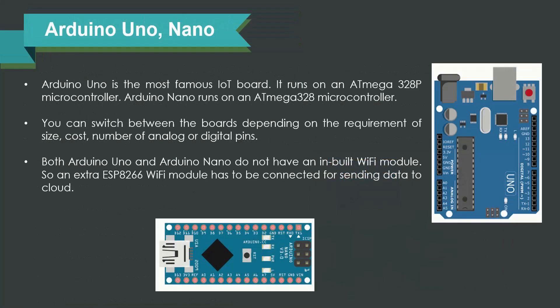Let us start with Arduino Uno and Nano. Arduino Uno is the most powerful as well as famous IoT board in the market. It runs on an ATmega328p microcontroller. Arduino Nano runs on an ATmega328 microcontroller. You can switch between the boards depending on the requirement based on size, cost, and analog and digital pins. Both Arduino Uno and Nano do not have an inbuilt Wi-Fi module, which means you have to add an extra module to get Wi-Fi support.